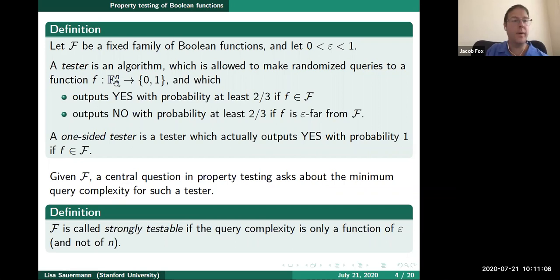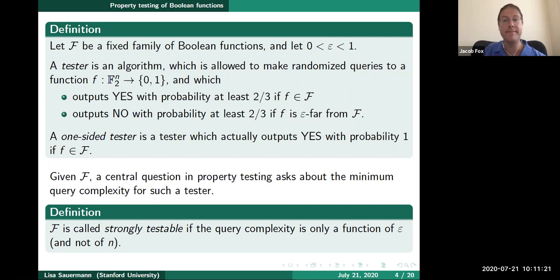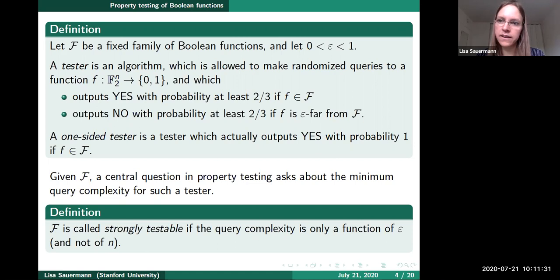There's a question from Clement Connen: are these results crucially relying on the Hamming distance and uniform distribution, or can they be generalized to other measures, for example product distributions over F2^N? Well, so far we only discussed definitions. The results discussed later in the talk mostly crucially rely on the Hamming distance, but it would be an interesting question to explore these directions for other notions of distance.